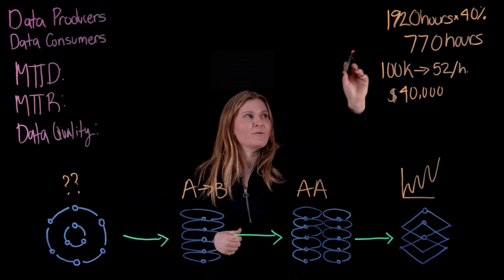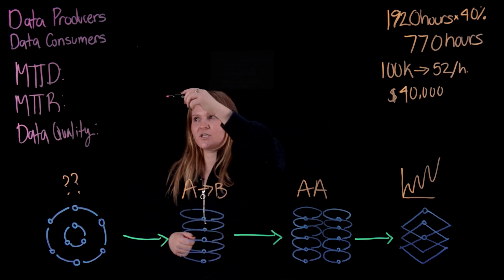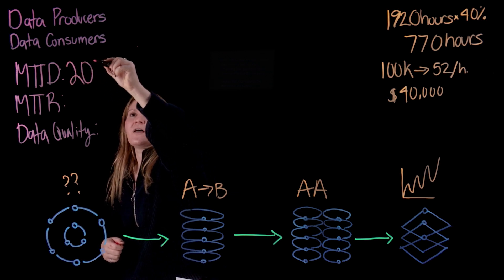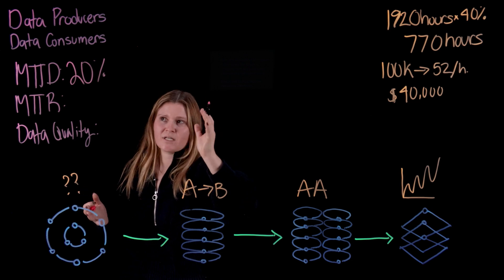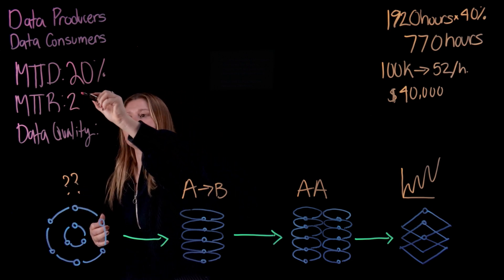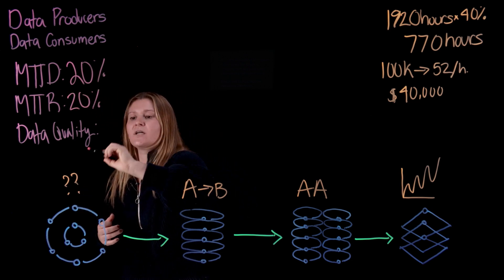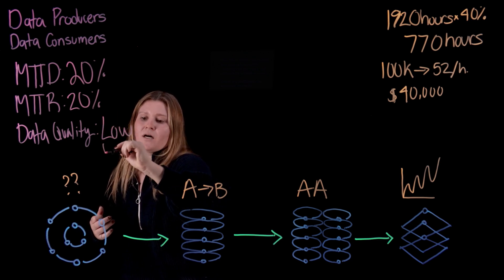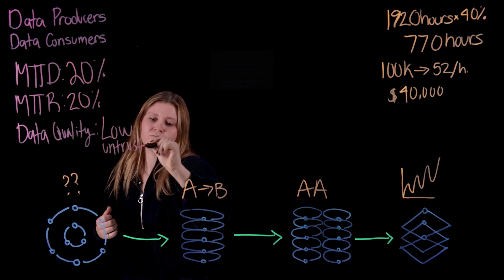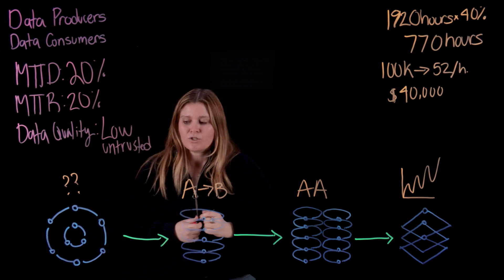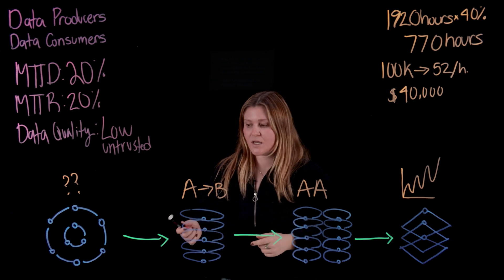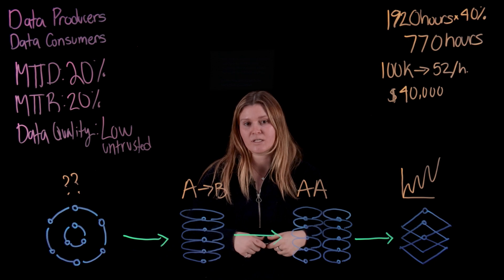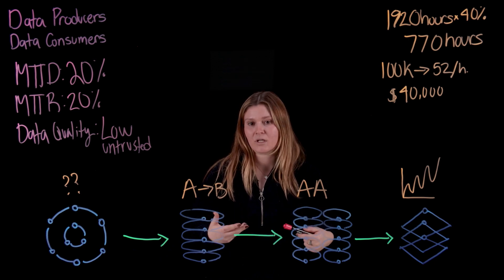We talked earlier about how we got to this 40% number — the average mean time to detection between 10 and 30%, we're using 20; the same for resolution; and currently data quality is low and untrusted. So now let's re-explore this example of a data journey, but this time imagining that you have a data observability solution in place.